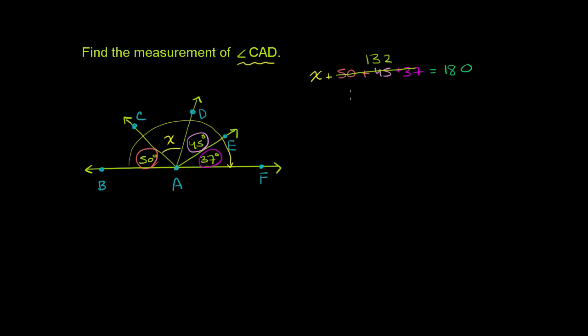We can subtract 132 from both sides. On our left-hand side, we're left just with an x. On our right-hand side, 180 minus 32 is 48.